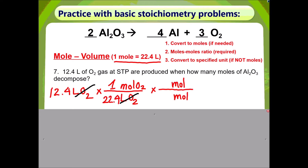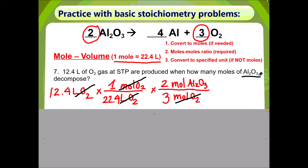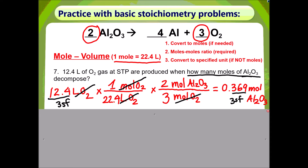With Step 1 complete and moles of oxygen in hand, we move on to Step 2, which is the moles-to-moles ratio. We place moles of oxygen on the bottom because we no longer need it, and we place moles of aluminum oxide on top. We don't need Step 3 because the question is asking for how many moles of aluminum oxide, and we already end up with moles of aluminum oxide on top. The final answer is 0.369 moles of aluminum oxide.